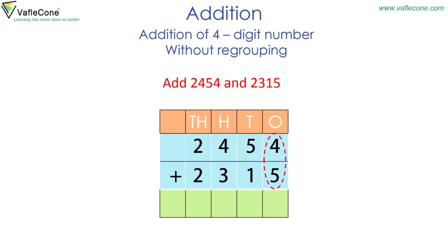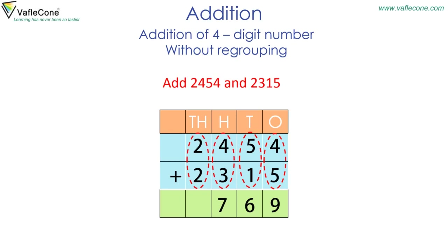Four plus five is equal to nine. At the tens place, five plus one is equal to six. At the hundreds place, four plus three is equal to seven. At the thousands place, two plus two is equal to four. The sum is 4769.